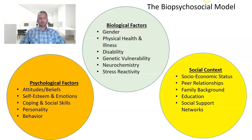We recognize that all of these are intersecting — our biology changes the way we think, and our social context changes the way we think and behave. There are bidirectional arrows across all of these: the way we think affects our biology and the way we engage our social context, and vice versa. Our social context shapes the way we think, and socioeconomic status can affect our physical health and vulnerability to illness.